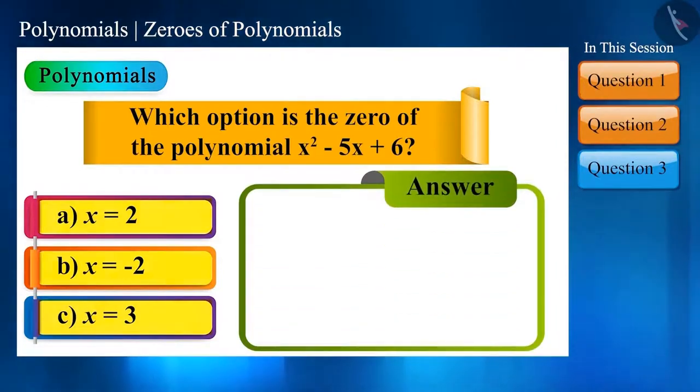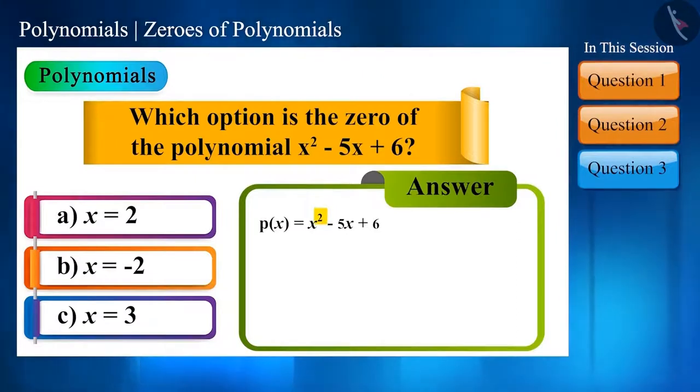But before solving, keep this in mind: since the highest power of polynomial is 2, this polynomial can have more than 1 zero. From the first option x is equal to 2, we get the value of polynomial as 0, so 2 is the zero of this polynomial.